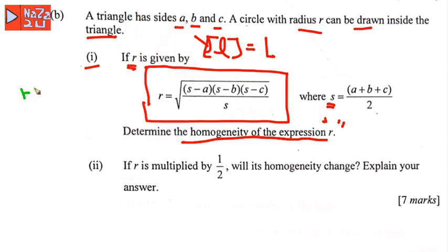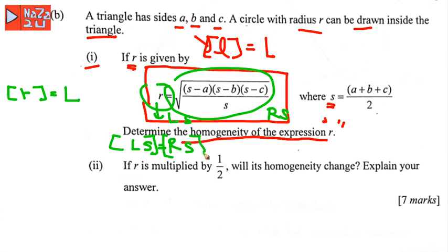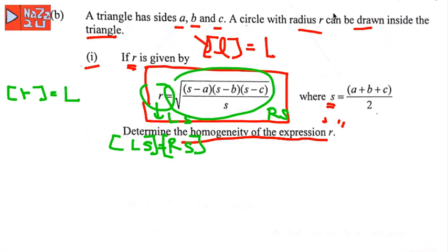The left side of the equation has dimension L. For the equation to be dimensionally homogeneous, the left side must equal the right side in terms of dimensions. Looking at the right-hand side, s minus a, s minus b, s minus c, and s all refer to lengths, so each has dimension L.